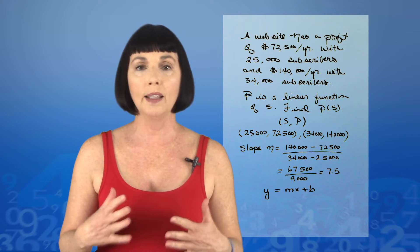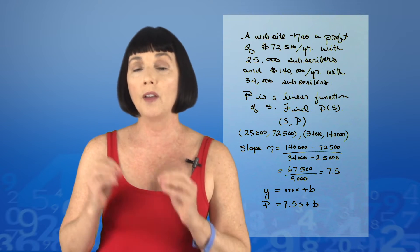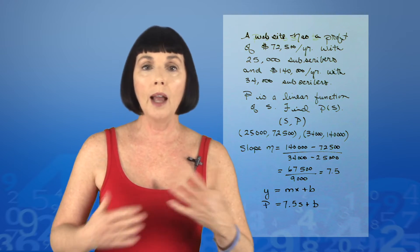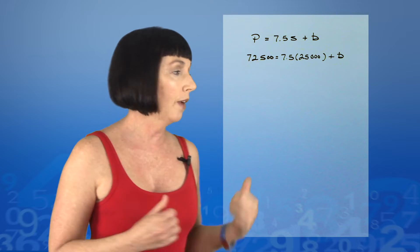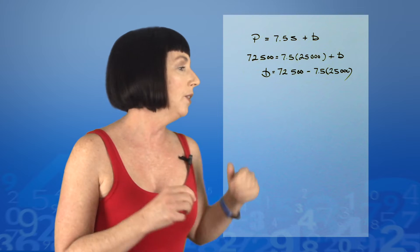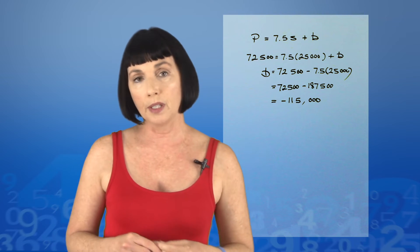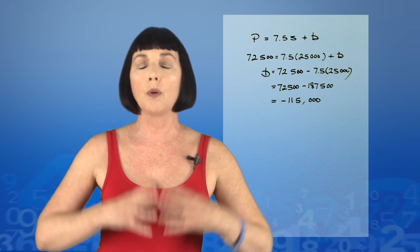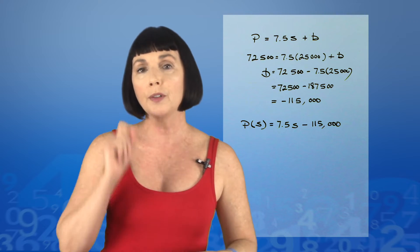The equation of a line is y equals mx plus b. In this case, p equals 7.5s plus b. We plug in either of our points to find b. So 72,500 equals 7.5 times 25,000 plus b, giving us b equals 72,500 minus 187,500, which equals negative 115,000. So our profit function p(s) is equal to 7.5s minus 115,000.